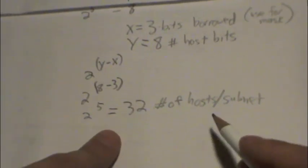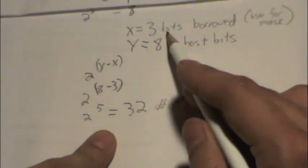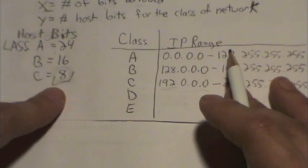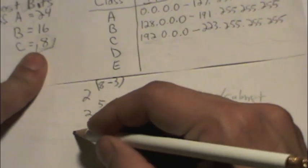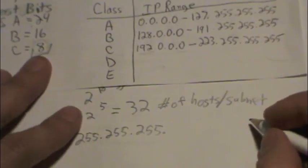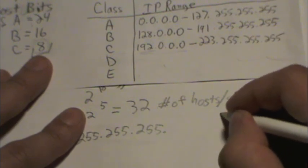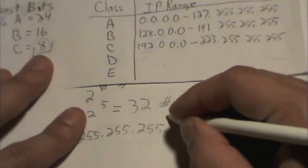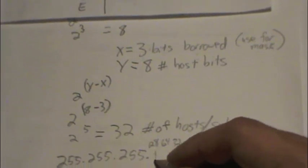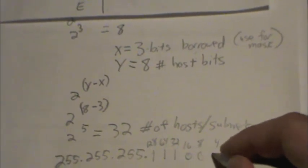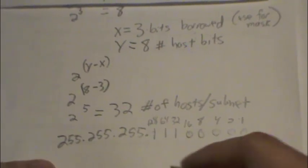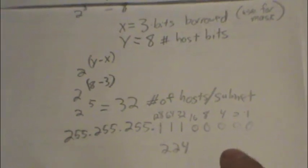We need to determine our mask, and like I said, we're going to take a look at the number of bits borrowed. So we're going to look at the last octet, especially since we're dealing with 8 host bits here. So we're going to have our 255.255 dot. We'll go ahead and write out our binary values here: 1, 2, 4, 8, 16, 32, 64, 128. X comes into play. If we borrowed 3 bits, we're going to borrow 1, 2, 3 bits, and make the rest zeros here. We're going to add these together. 128 plus 64 is 192, plus 32 is 224. And so now we have our mask.